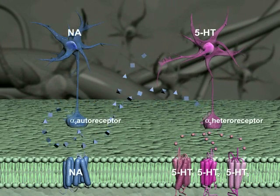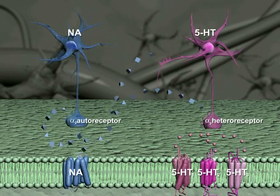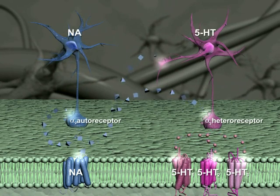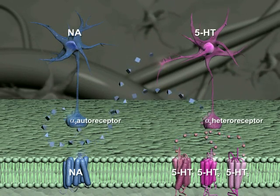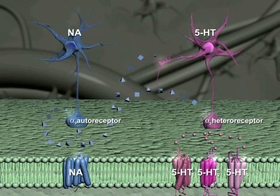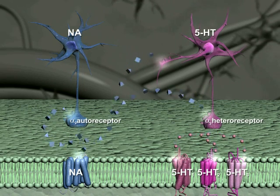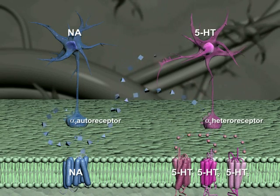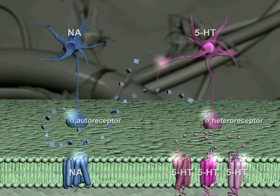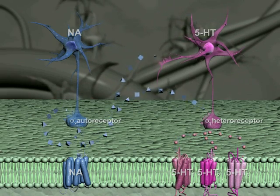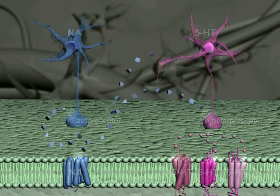Disruption in release of noradrenergic (NA) and serotonergic (5-HT) neurotransmitters is central to depression. The pharmacological objective of most antidepressants is to increase monoamine — noradrenergic, serotonergic, and dopaminergic — release and/or reduce the uptake in the synaptic cleft.